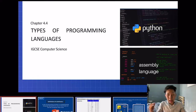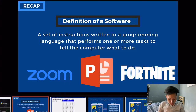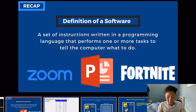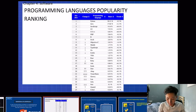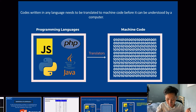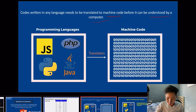In this video, we are going to learn the different types of programming languages available. Think of programming languages as tools that help us create software. Recapping the definition: software is a set of instructions written in a programming language that tells the computer what to do. Codes written in any language need to be translated into machine code before they can be understood by a computer, because computers can only understand binary.